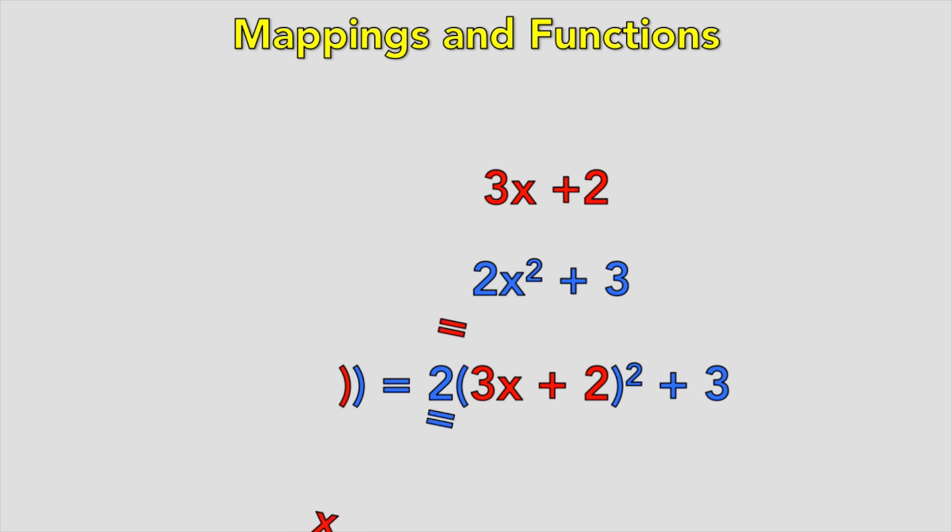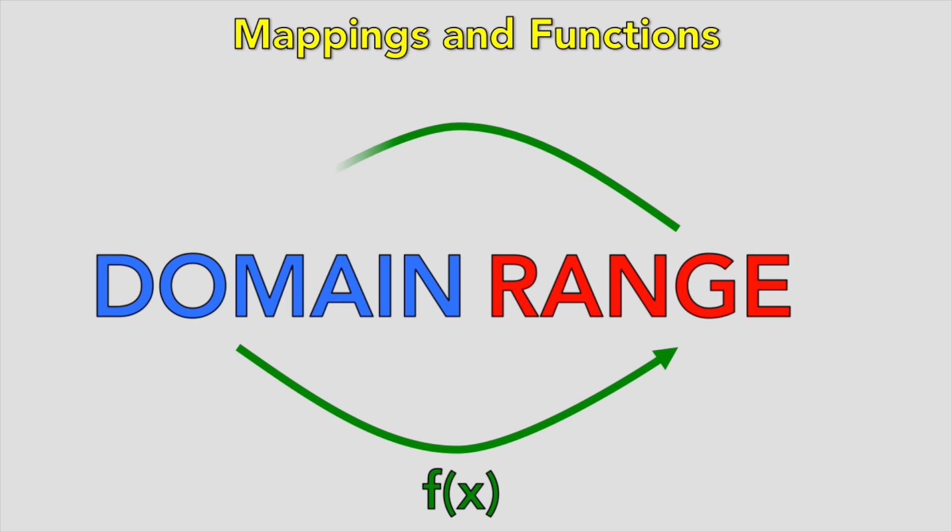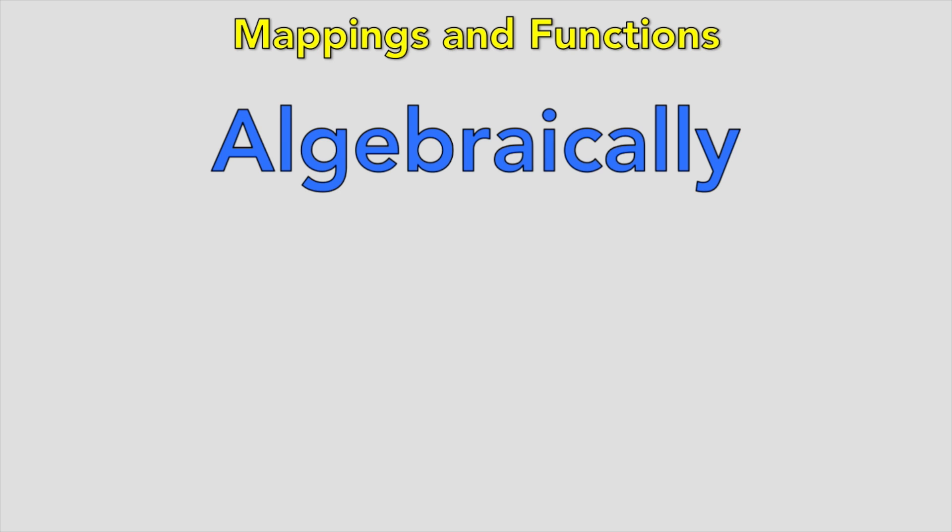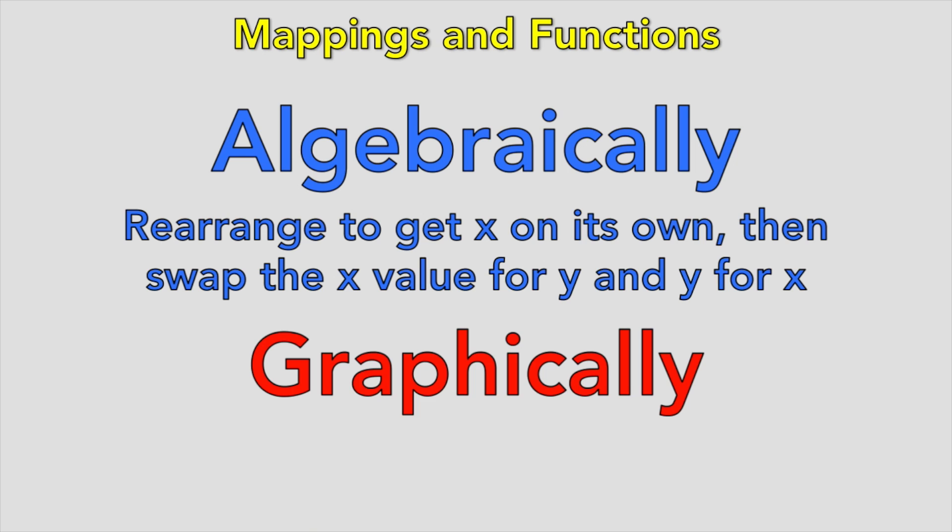So if a function maps a domain onto a range, what if you're only given the range? Well, you can map it back. It's an inverse function, and there are only two ways you can go about it. Firstly, you can do it algebraically by rearranging to get x on its own on one side, then just swapping the x value for the y value, and any y values for x values. Nice and simple. So y equals x plus 2 becomes x equals y minus 2, just swap the letters the inverse function is, y equals x minus 2. And graphically just reflect it in the line y equals x. Simple enough.